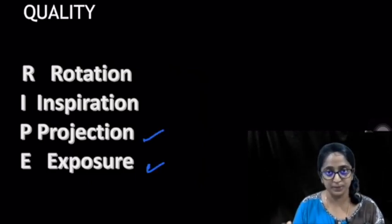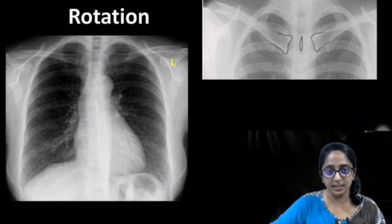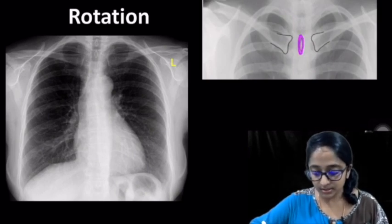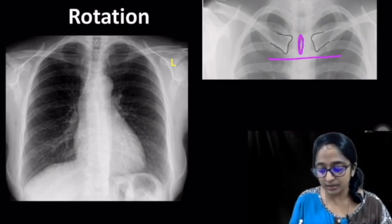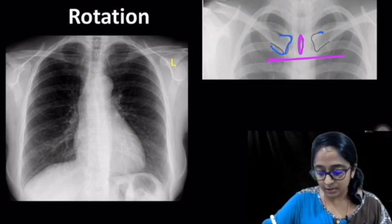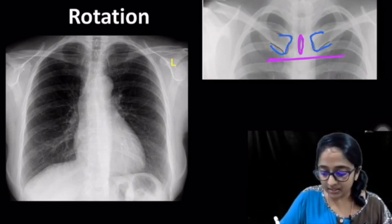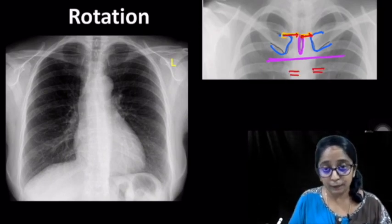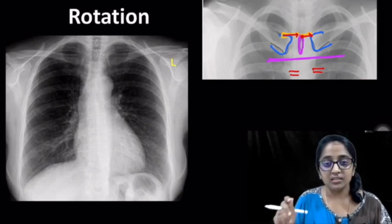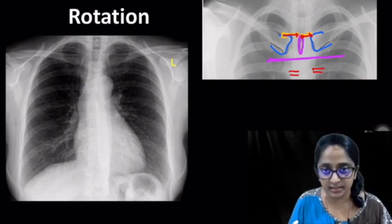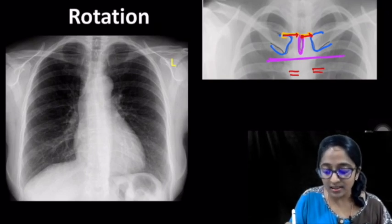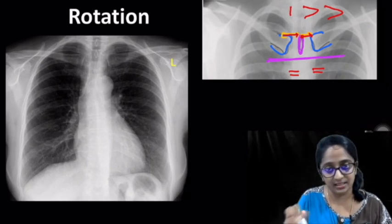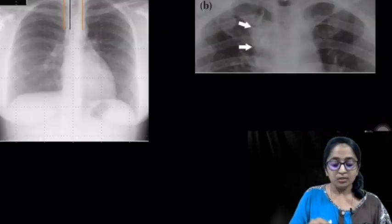Let's see them one by one. First, about rotation: look at the spinous process that lies between the clavicles, mark out the medial ends of the clavicles on either side, then compare the distances. If equidistant, the radiograph is non-rotated. If the distance on one side is greater, the radiograph is rotated to that side.